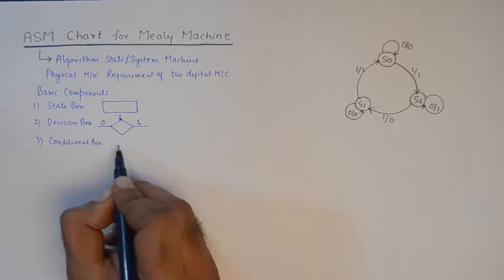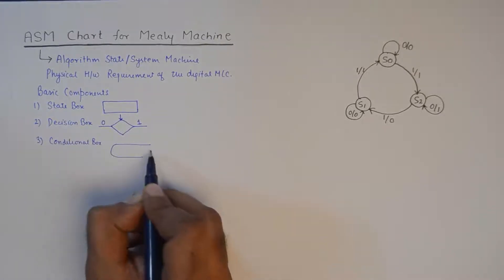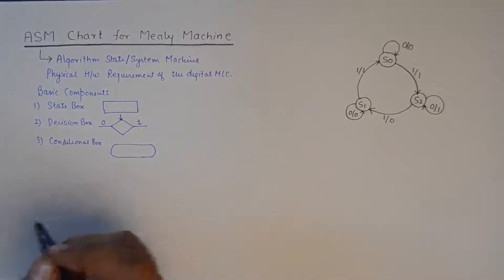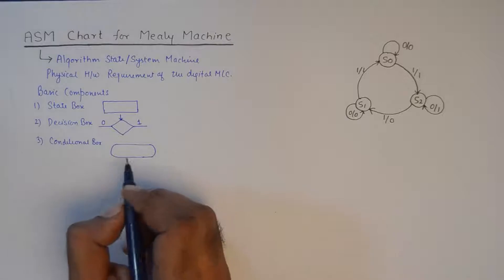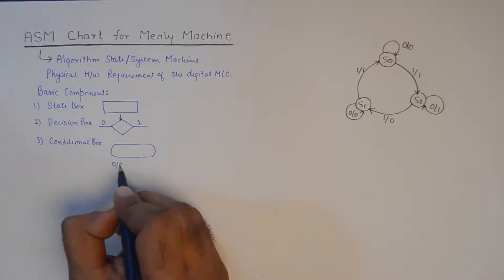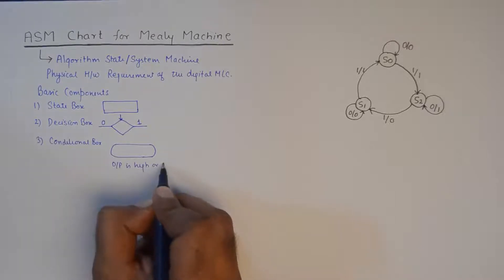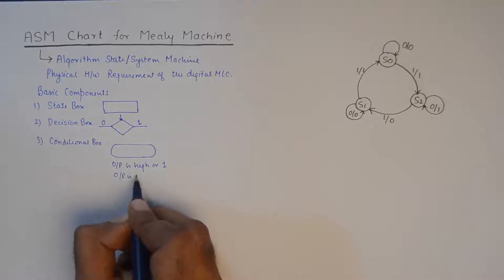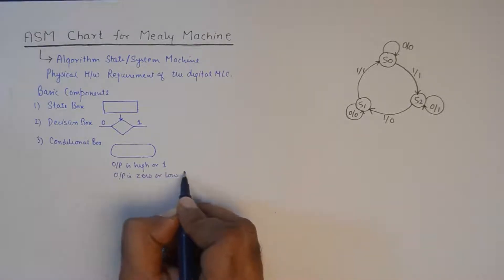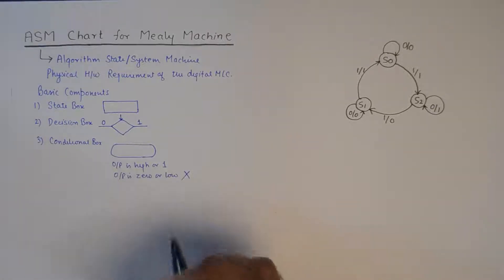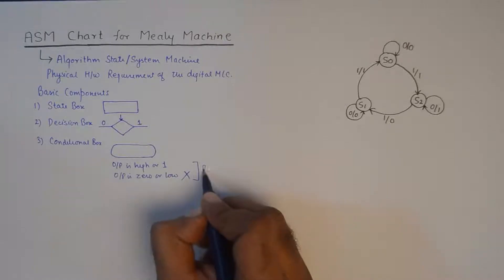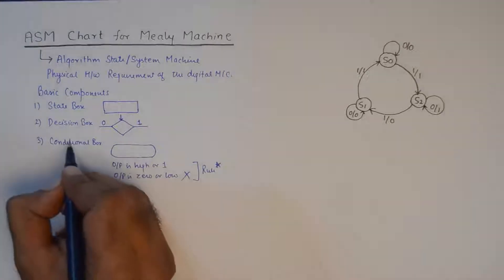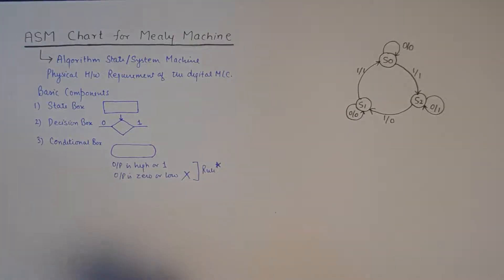The conditional box is a rectangular box with oval edges. We use the conditional box only when the output is high or one. When the output is zero or low, there is no need to use this conditional box going from one state to the other. That is one rule which is very important — the conditional box is only used when the output transition is one going from one state to the other.